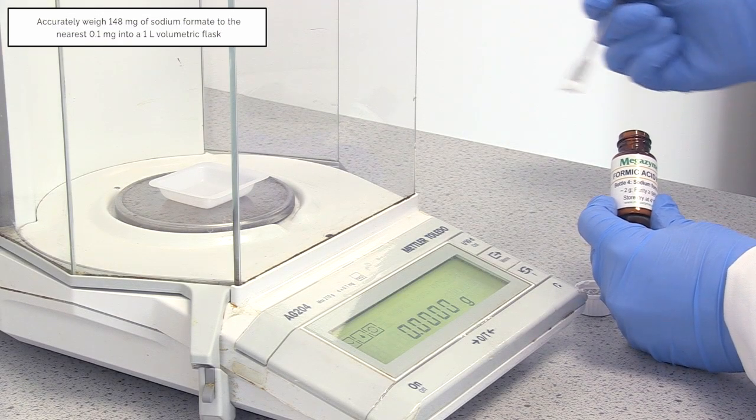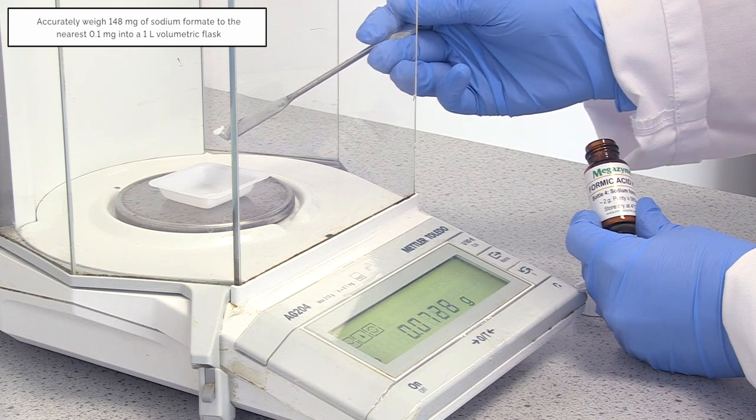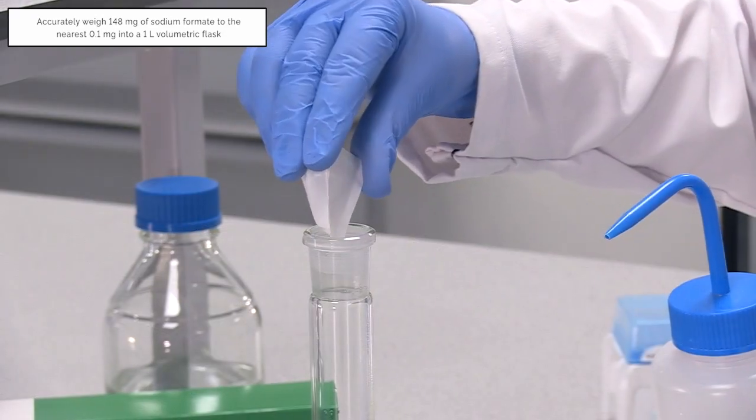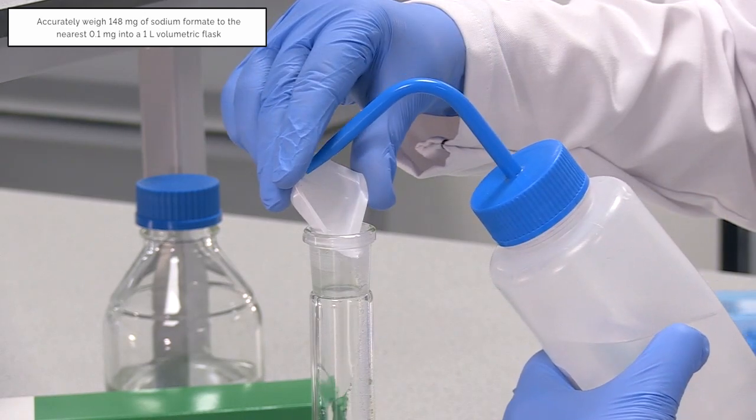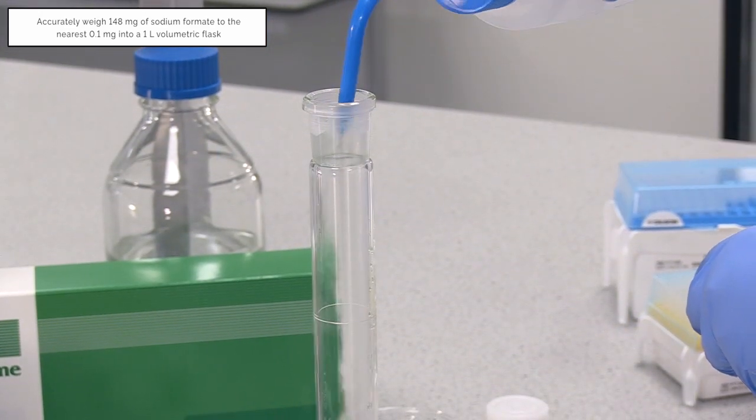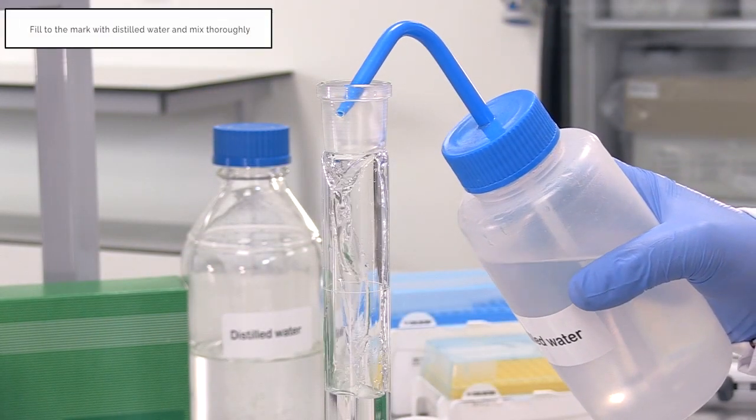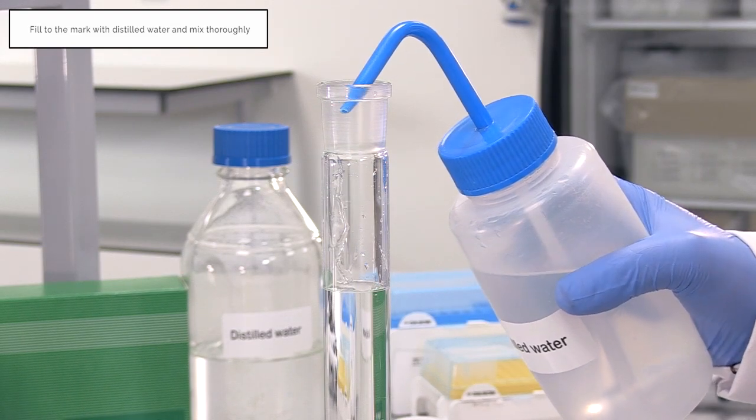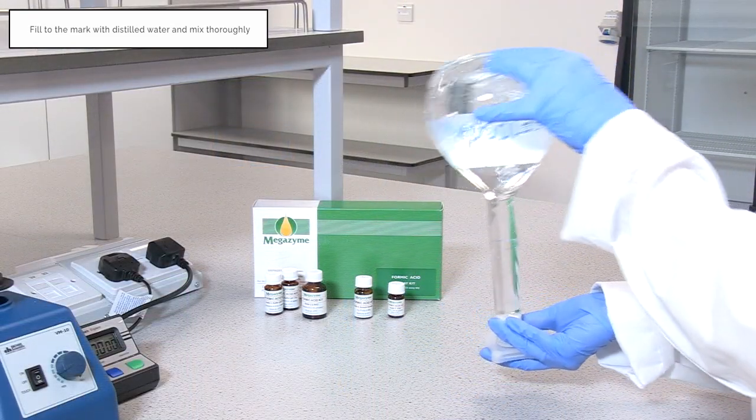Accurately weigh 148 mg of sodium formate to the nearest 0.1 mg into a 1 litre volumetric flask. Fill to the mark with distilled water and mix thoroughly. This corresponds to 0.1 g per litre formic acid.